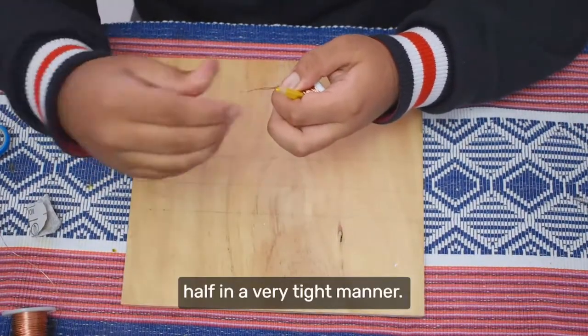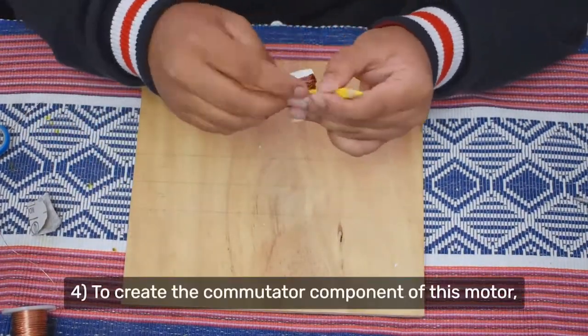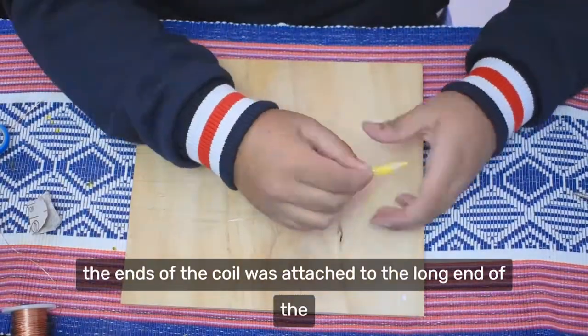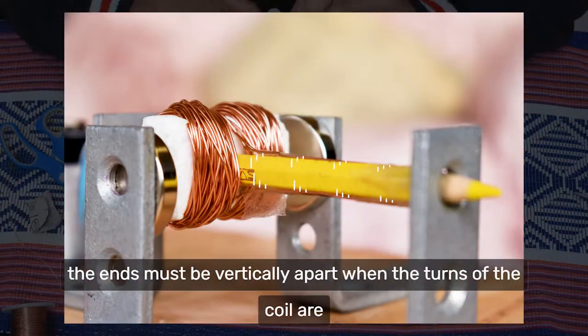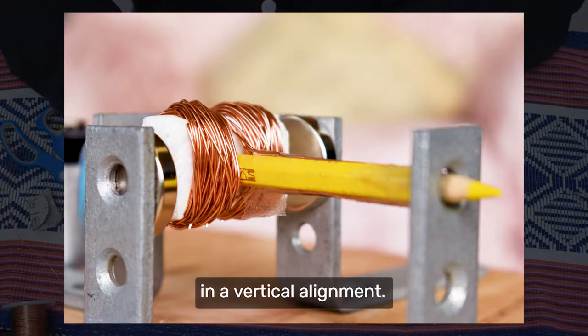Both edges of the wire were folded in half in a very tight manner. 4. To create the commutator component of this motor, the ends of the coil was attached to the long end of the pencil with sticky tape. The placement of the edges of the coil was very specific: the ends must be vertically apart when the turns of the coil are in a vertical alignment.